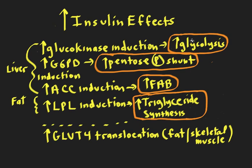Glycolysis is turned on to help the liver take up glucose. The pentose phosphate shunt is turned on to produce NADPH, which is needed for reductive biosynthetic reactions such as fatty acid and triglyceride biosynthesis. Acetyl-CoA carboxylase is turned on because there's excess acetyl-CoA from glycolysis that needs to be converted to fatty acids and sent to fat cells for energy storage.